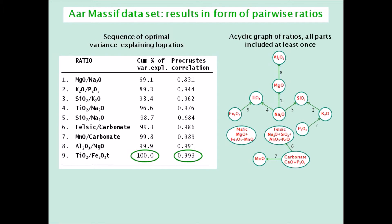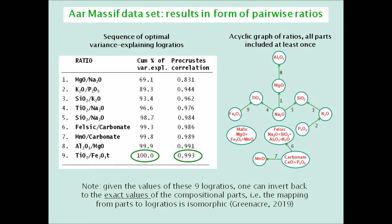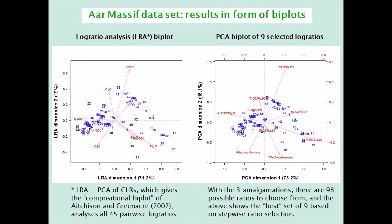On the right is the graph of the log ratios where the arrows point to the numerator part. The amalgamation 'mafic' was not chosen. It is easy to reverse transform from the values of these nine log ratios back to the original parts — it is just the solution of a system of linear equations that is easy to set up (see Greenacre 2019). The Procrustes correlation of 0.993 means that the log ratio structure of the data is almost perfectly preserved using just these nine ratios. On the left is the log ratio analysis biplot, which analyzes all 45 log ratios in this case, and on the right the principal component analysis biplot using just the nine selected log ratios. The concordance of the two geometries of the sample points is clear.